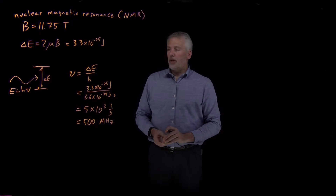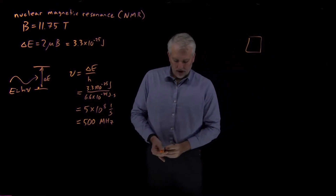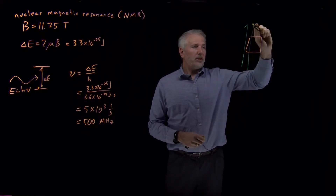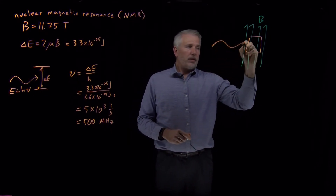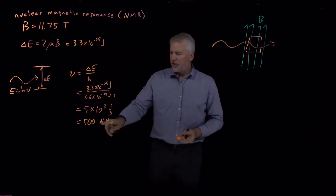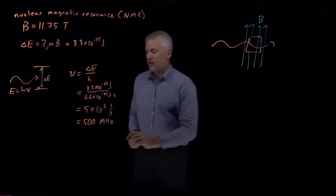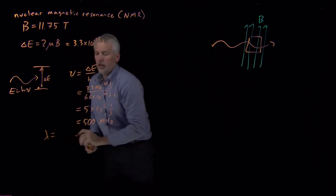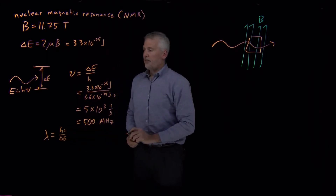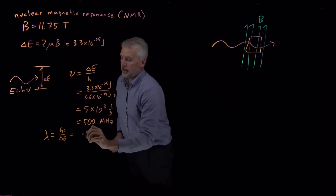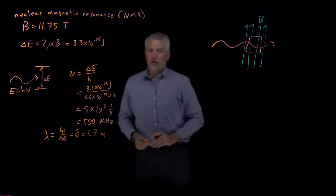NMR instruments can be used essentially as proton detectors. If you place a sample inside the magnet — so the whole sample is in the presence of a very strong magnetic field — then you shine radiation at it. The frequency of these photons is 500 megahertz, so the wavelength would be c over nu, which works out to be 1.7 meters.